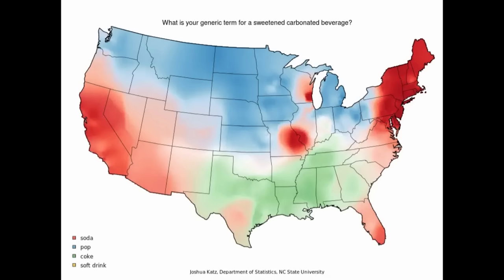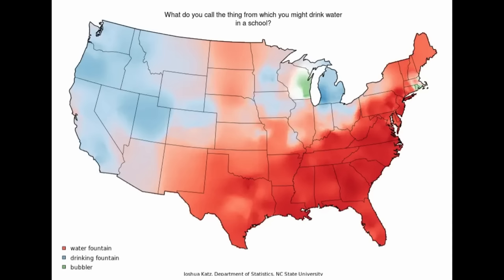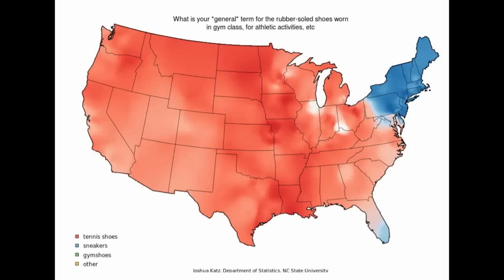One of the most interesting differences between different regions of the United States is how the use and pronunciation of different words change based on what part of the country you live in. Business Insider made a list of 22 maps showing these linguistic differences. This map shows what word people use to refer to drinks like Coke, Pepsi, and Sprite — in much of the Midwest it's called pop, on the East and West Coasts it's soda, and the South just calls it Coke. Another interesting thing is that while much of the Midwest says pop, for whatever reason Milwaukee and St. Louis overwhelmingly say soda. This one shows the split between whether you call it a water fountain or a drinking fountain, or in Rhode Island and Wisconsin, a bubbler. And this one shows a pretty stark split between sneakers and tennis shoes.